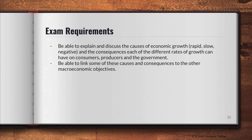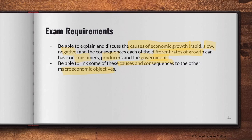That brings us to the end of this part on consequences of economic growth. For exam requirements, you need to be able to discuss the causes of economic growth — what causes rapid, slow, and negative growth — as well as the consequences on consumers, producers, and the government. Be able to link these causes and consequences to the other macroeconomic objectives which will be covered in upcoming videos. Once you've mastered these concepts, writing an essay should be no problem.